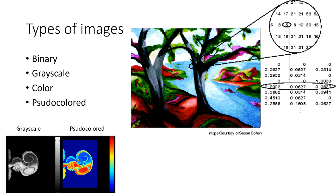Along with these main types of images, there exists another class of images called pseudocolored images. These images are similar to grayscale images in terms of structure, but instead of assigning only shades of gray to each picture element, here we assign fixed indexed color values.